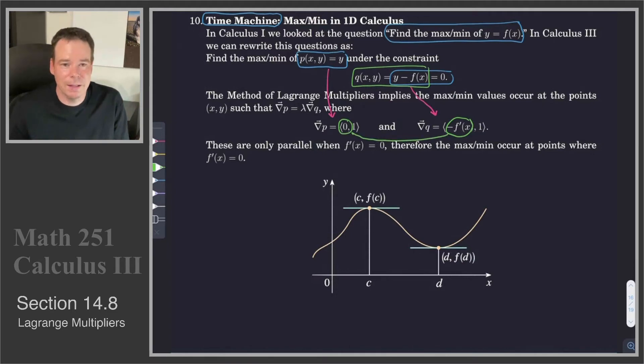So the candidates for maximum and min are where the derivative is 0. And that's precisely the technique we used in Calculus 1. It was known as Fermat's theorem. The maximum and minimum values occur at the places where the derivative is 0. So we've just recast an old problem into the new terminology of Calculus 3. And we see that ultimately it ends up giving us the same method of solution, find where the derivative is 0.